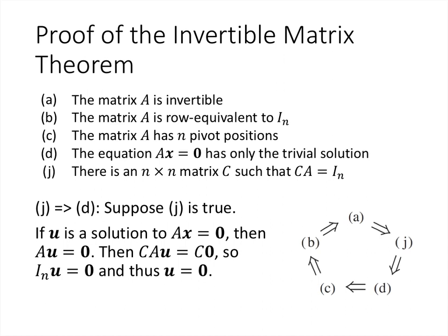Next, we prove that J implies D. We suppose J is true, so there's a matrix C such that CA equals the identity, and we want to prove that Ax equals 0 has only the trivial solution. We let u be a solution, meaning Au equals 0, and multiply both sides by C. On the left-hand side we get CAu, and on the right-hand side C times 0, which is the zero vector. CA is the identity, and the identity times u is u. So u equals 0, which is what we wanted.